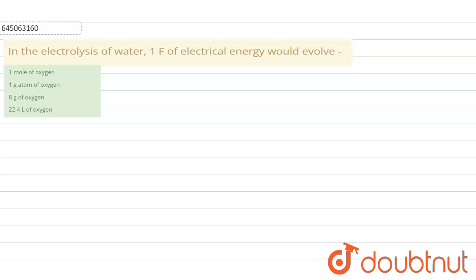Hello everyone, in this question it is given that in the electrolysis of water, one farad of electrical energy would evolve. So we have to find out how much - what will be the reaction first.